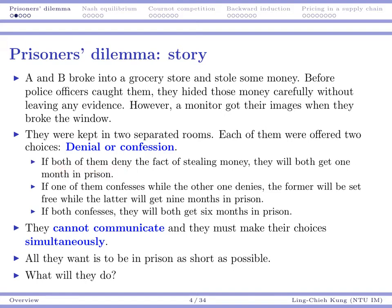Suppose both of them choose not to tell the truth. If both of them deny, they will both get one month in prison — that's because it is evident that they have broken the window, so they must be put in jail for one month, but because there is no evidence for the stolen money, they cannot be put in jail for longer. However, if one confesses while the other denies, then the former will provide evidence to the police and the latter will get nine months in prison, while the former will be set free because he cooperates with the police officers.